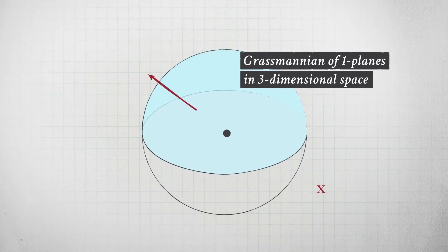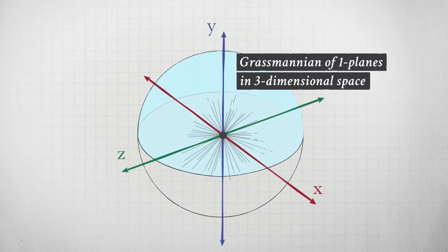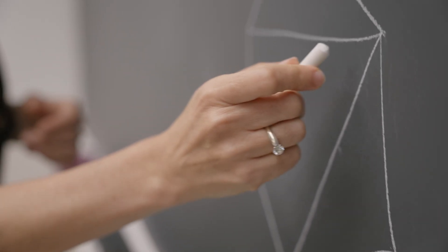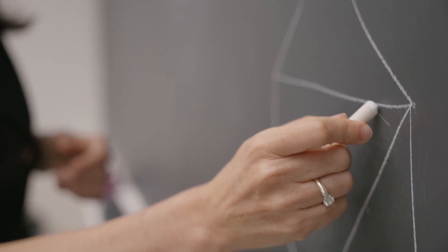So the XYZ space. We can also talk about Grassmannians in four-dimensional space, five-dimensional space, and so on. Even though it becomes impossible to visualize, mathematicians can make sense of this.